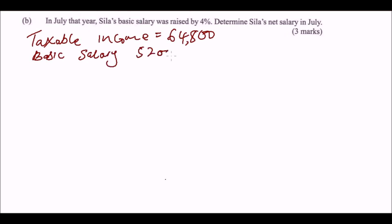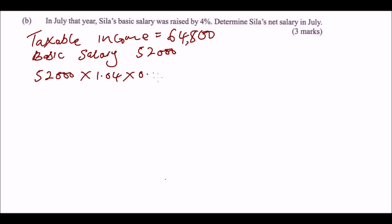The basic salary was fifty-two thousand. If it was raised by four percent, we multiply fifty-two thousand by 0.04 to find the increase. That gives us six hundred and twenty-four shillings as the additional amount. We then determine the tax on that increase at the applicable rate of three percent, giving us six hundred and twenty-four shillings in additional tax.